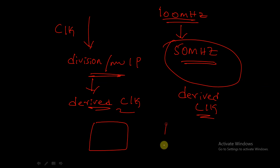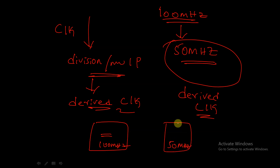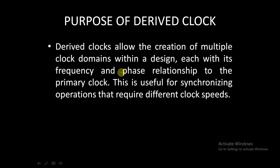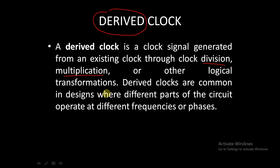For example, suppose there are two modules: module A needs a 100 MHz clock and module B needs a 50 MHz clock. You can give the original clock to module A, then perform clock division and provide 50 MHz to module B. This clock derived at 50 MHz is the derived clock being fed to module B.